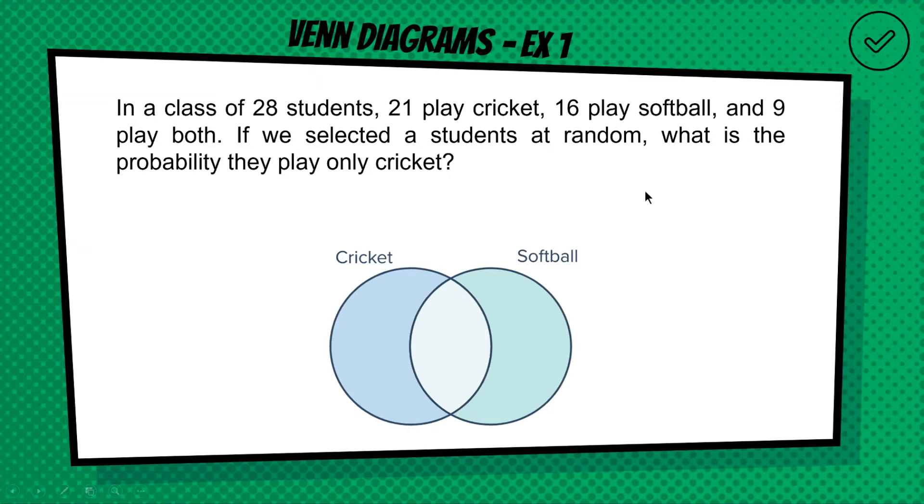If I put 21 in my cricket circle and I put 16 in my softball circle and then I put 9 in my overlap, well something's wrong here. Because now if I do 21 plus 9, I get 30, and 30 plus 16 gets me 46. So how am I getting 46 when there's only 28 students in the class?